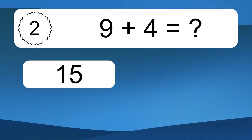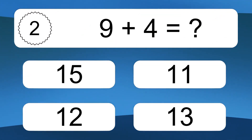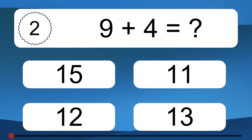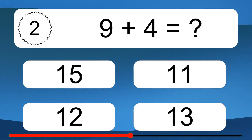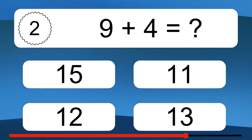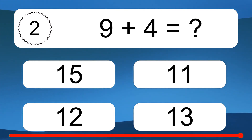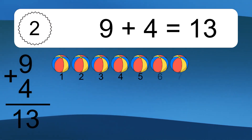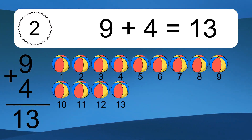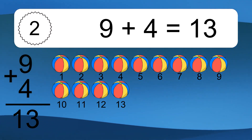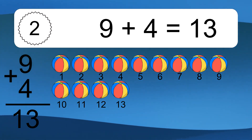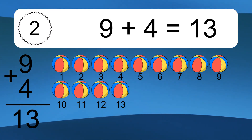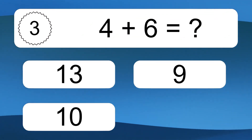9 plus 4 equals what? 9 plus 4 equals 13. Let's count it. 1, 2, 3, 4, 5, 6, 7, 8, 9, 10, 11, 12, 13.